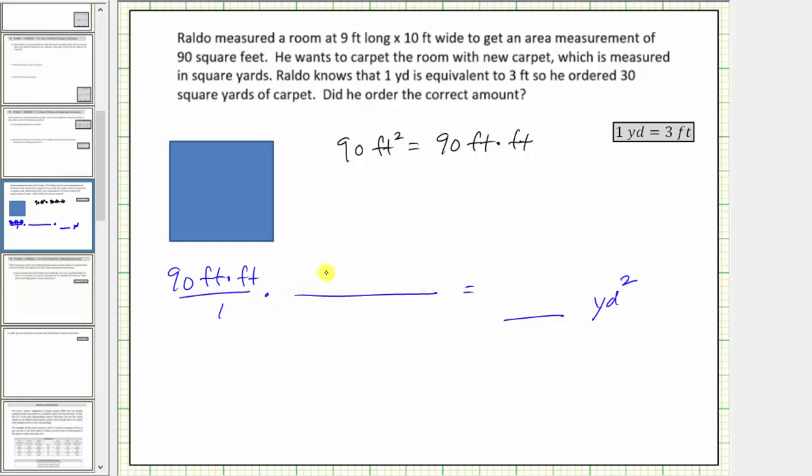Now we use the conversion one yard equals three feet to form a unit fraction so that both units of feet will simplify to one. We know we have to have the units of feet in the denominator, so let's go ahead and put feet in the denominator and yards in the numerator. The conversion is one yard equals three feet and therefore part of the unit fraction is one yard divided by three feet.